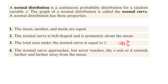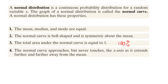Fourth, the normal curve approaches but never touches the x-axis. It basically extends farther and farther away from the mean, but it never intersects the x-axis. There is no intersection.